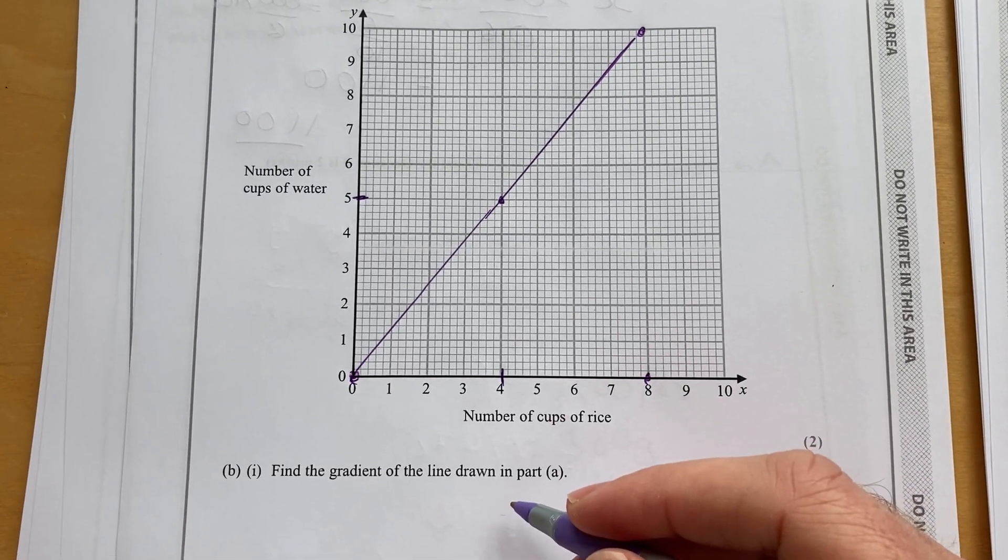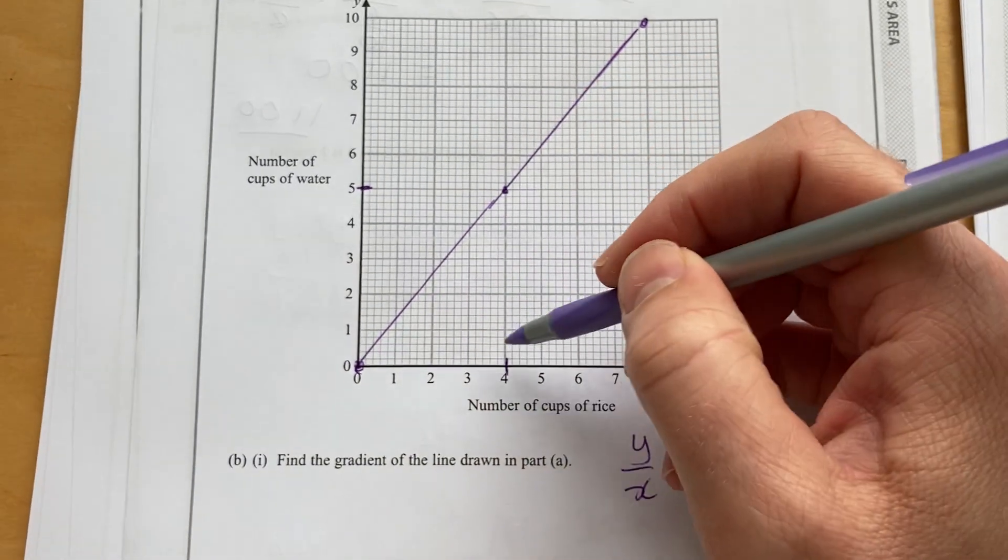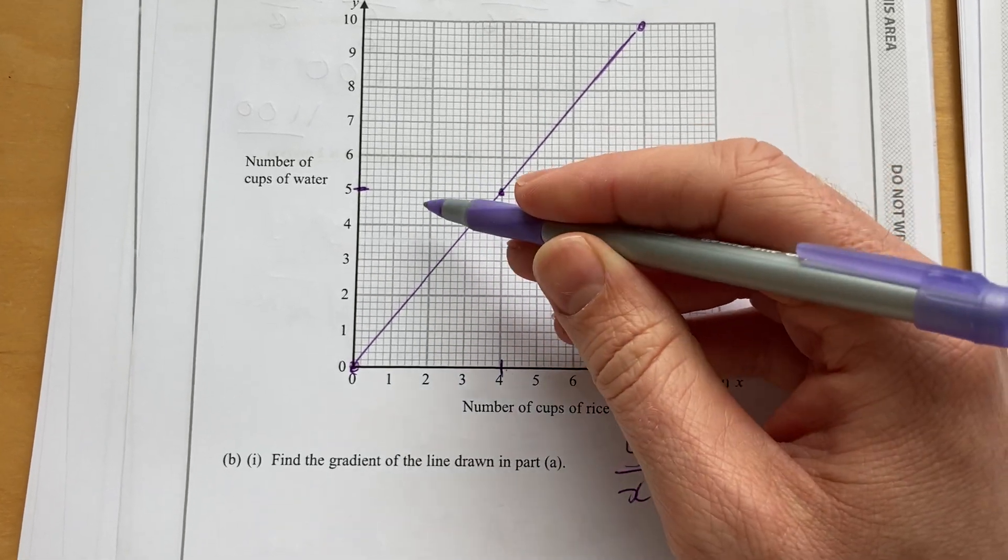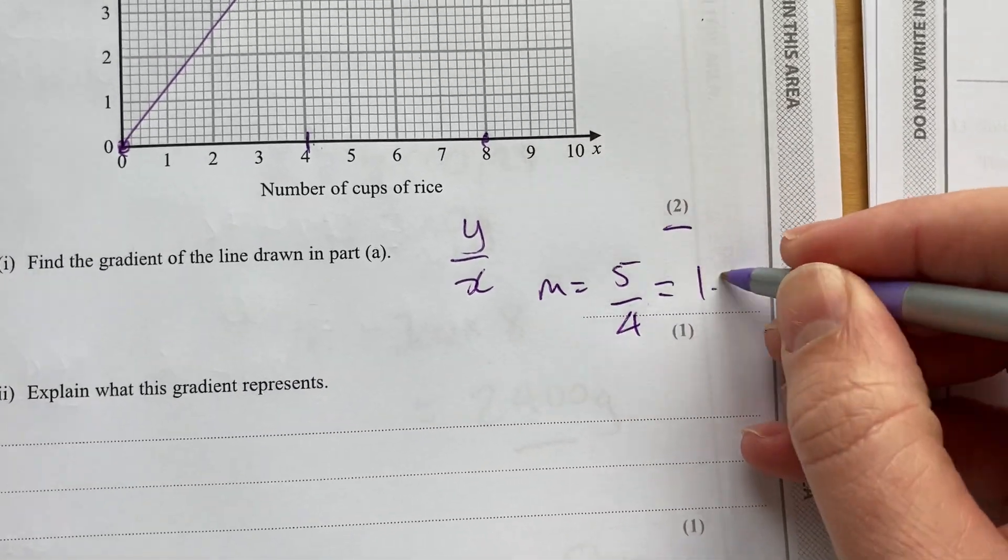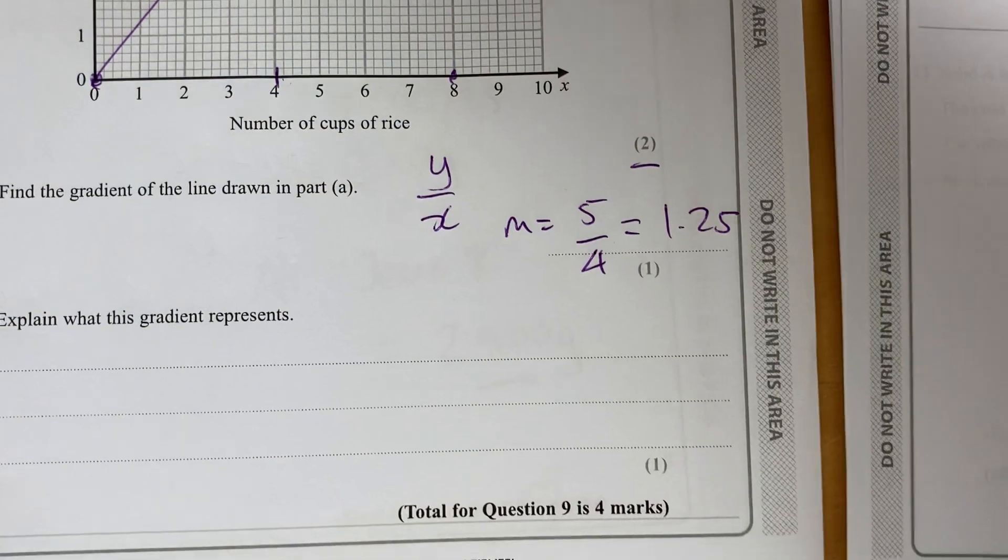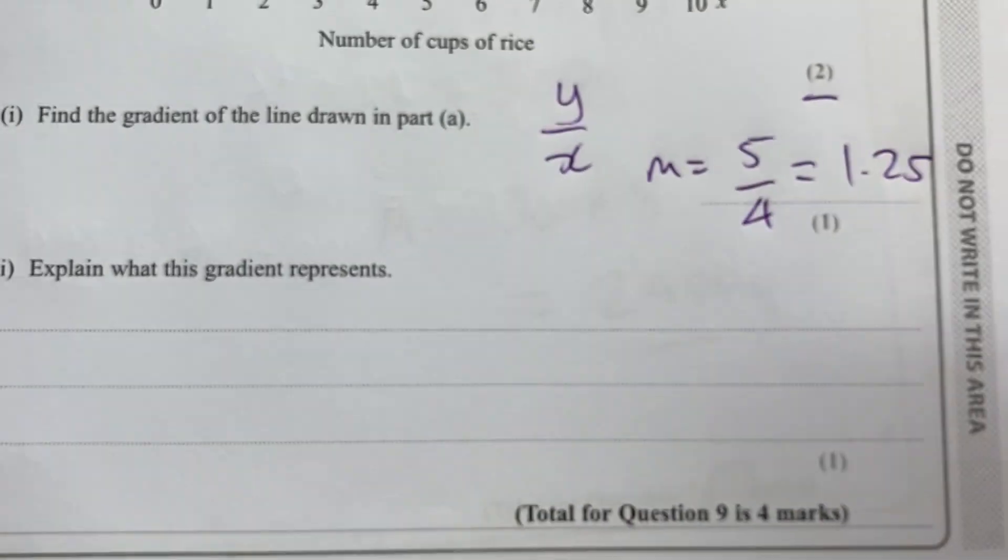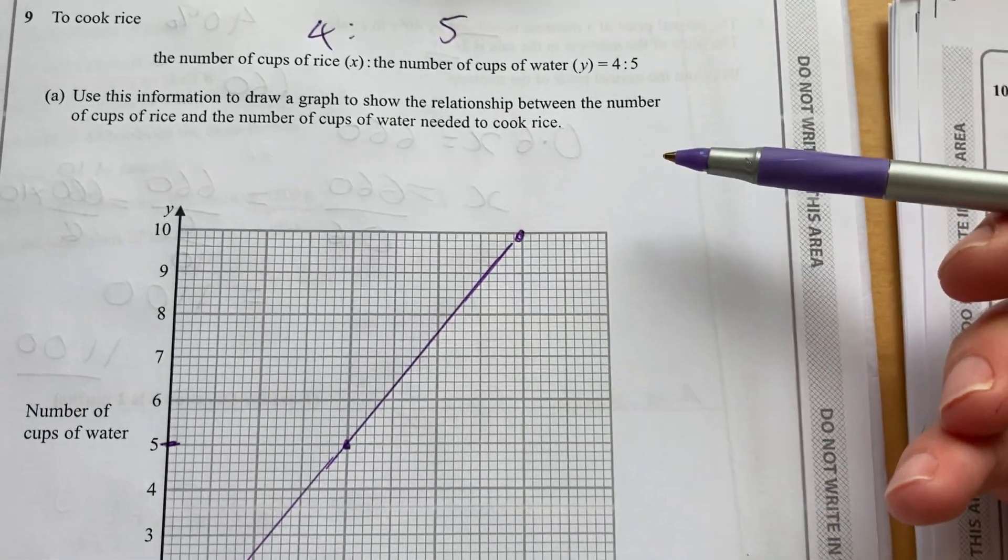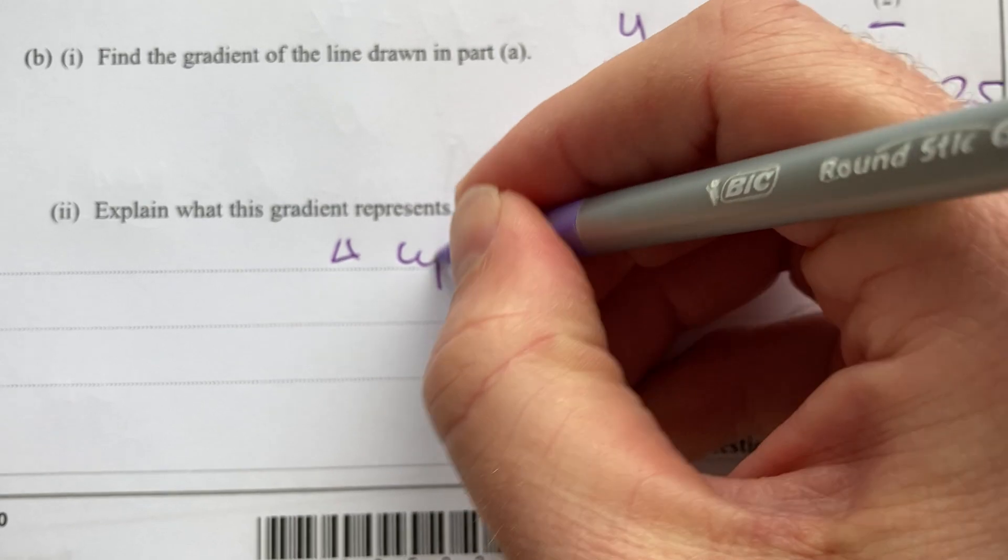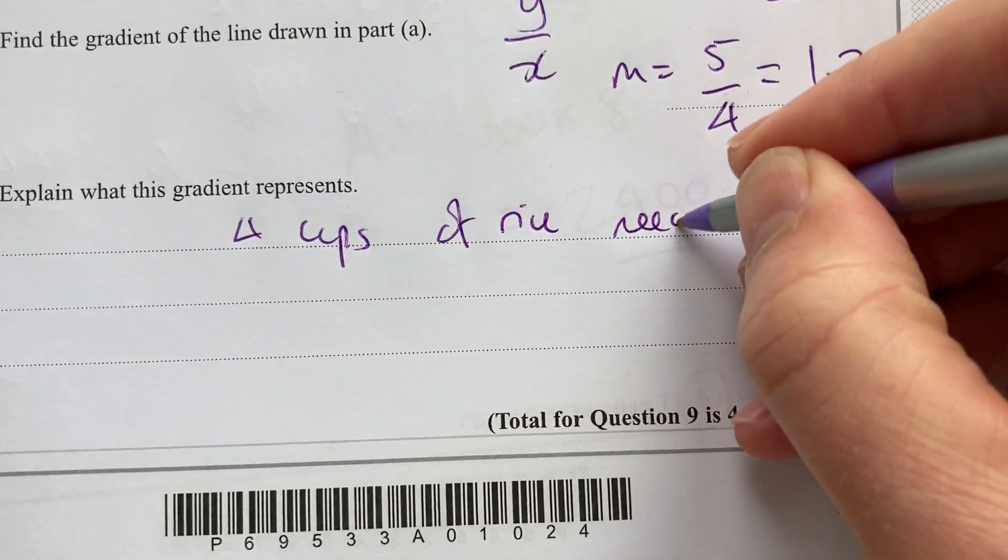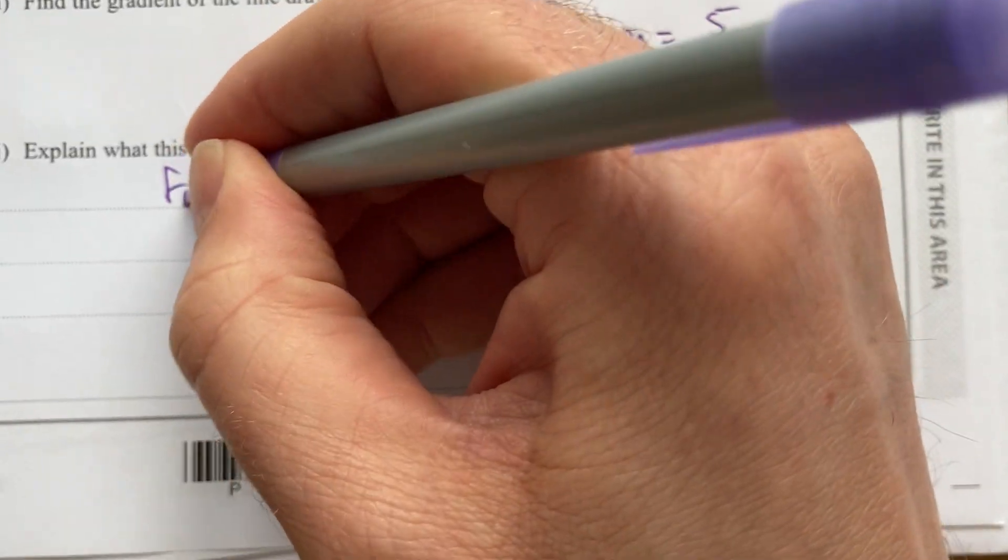So, I get that graph there. That should get me two marks. Then it says, find the gradient of the line of this graph. Remember, the gradient is y over x. So, for every movement in the x direction of 4, I've gone up by 5. So, m is 5 over 4, or 1.25. Now, it says, explain what this gradient means. Well, pretty much what they said at the start. For every 4 cups of rice, we need 5 cups of water.